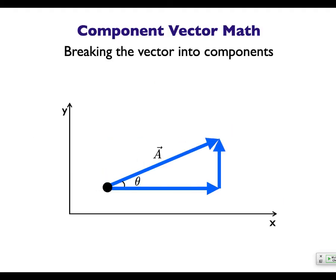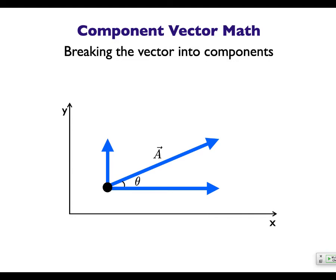The way to think about this is: if you break down vectors into their components, you get a nice right triangle, where this is the x-component and this is the y-component. If you want to find the length of a side and you know the length and the angle, this would be the adjacent side of your triangle, so that's going to be cosine. Then if you want to find the other side, you can do sine of this angle.